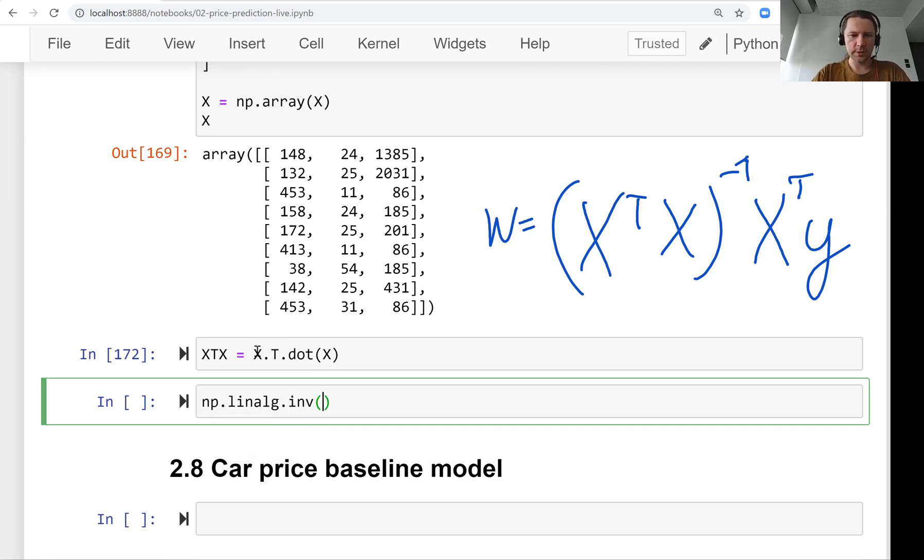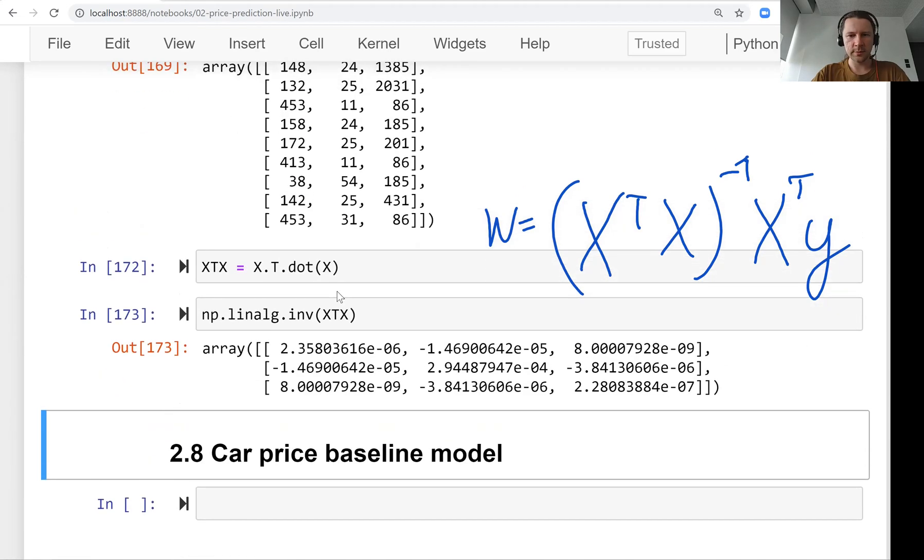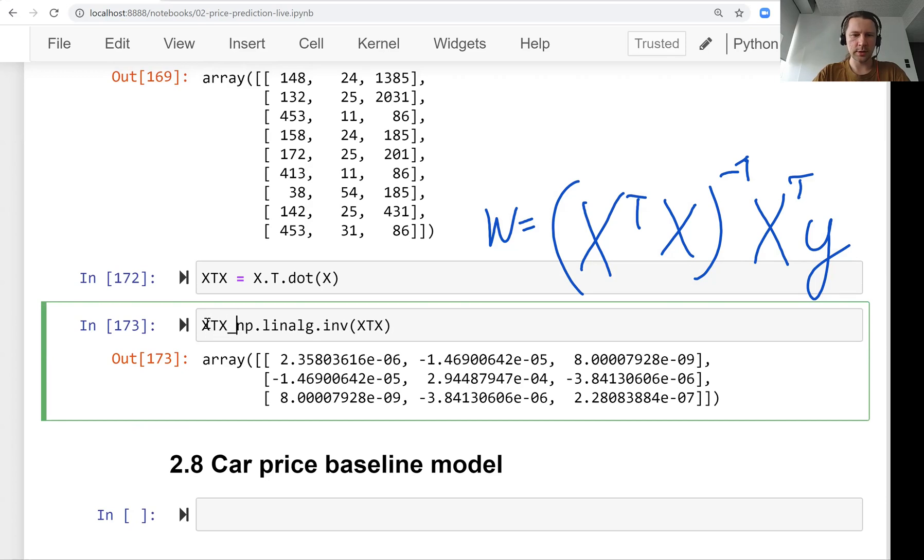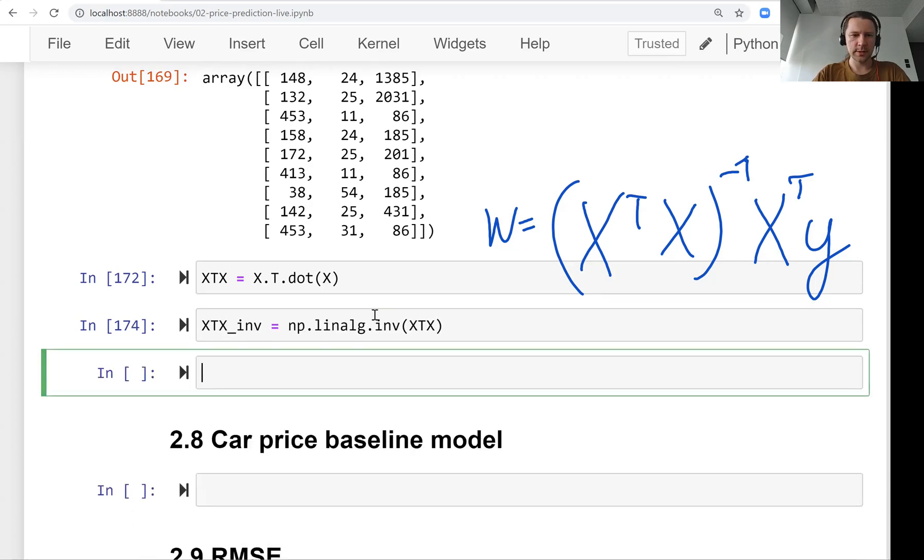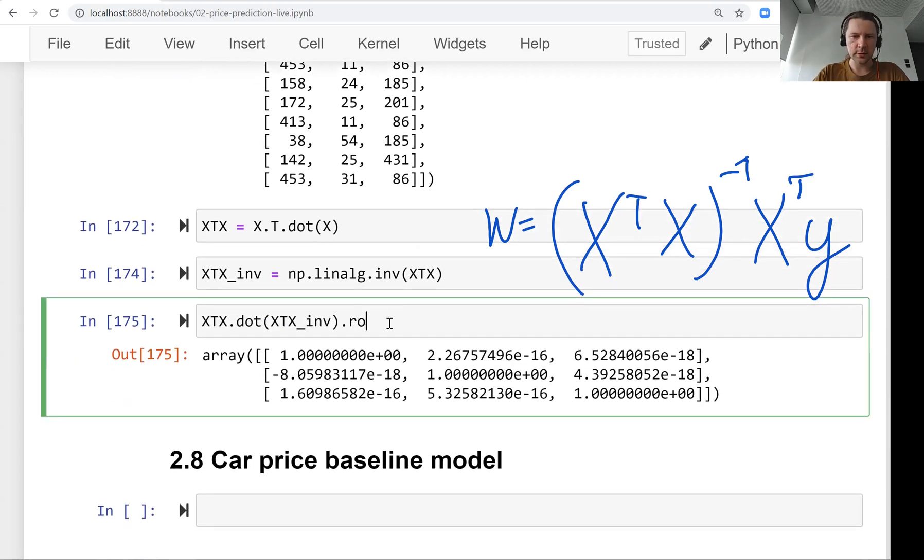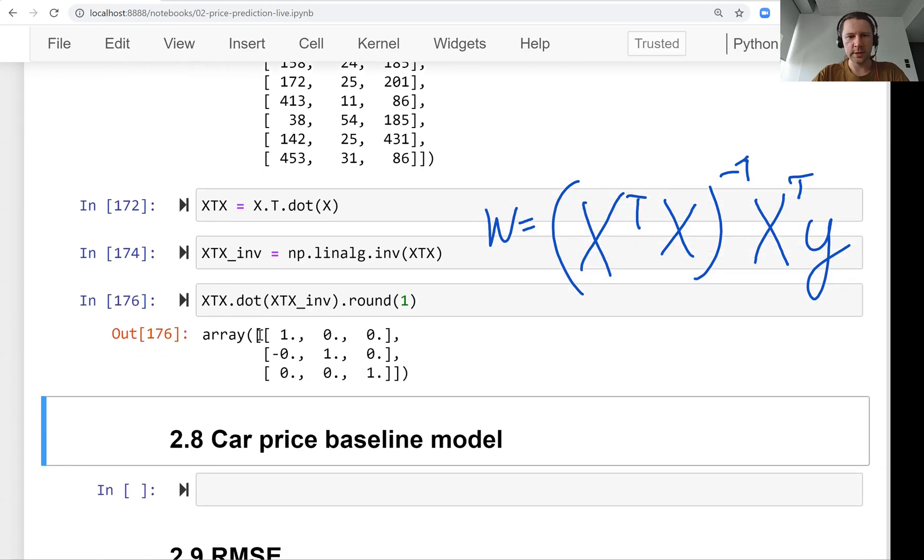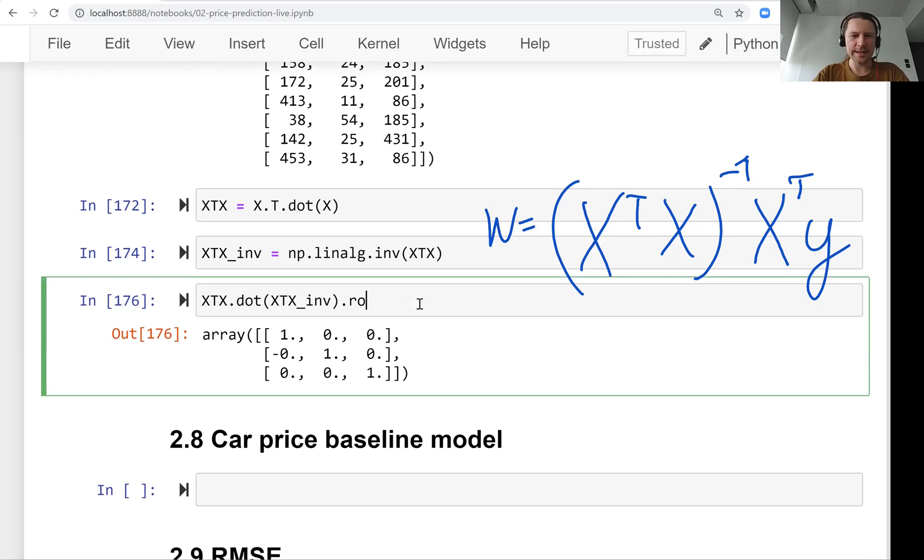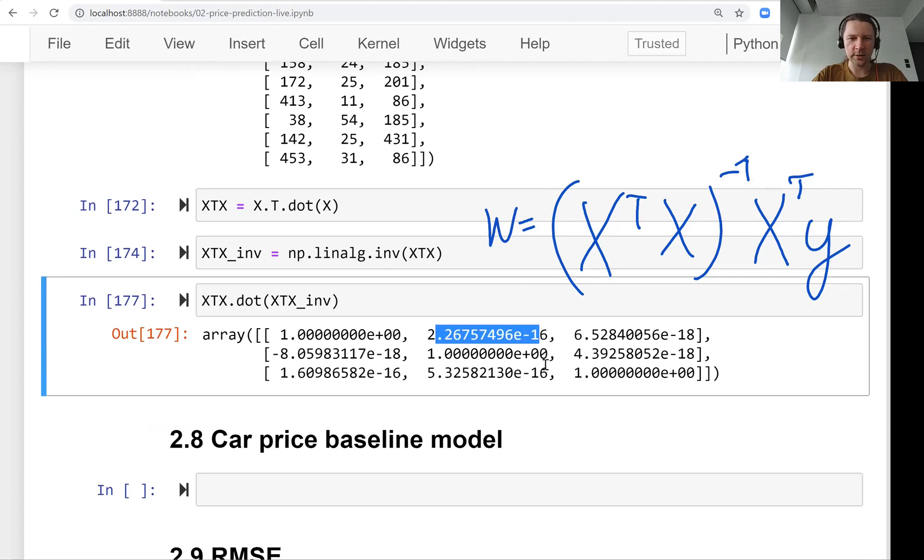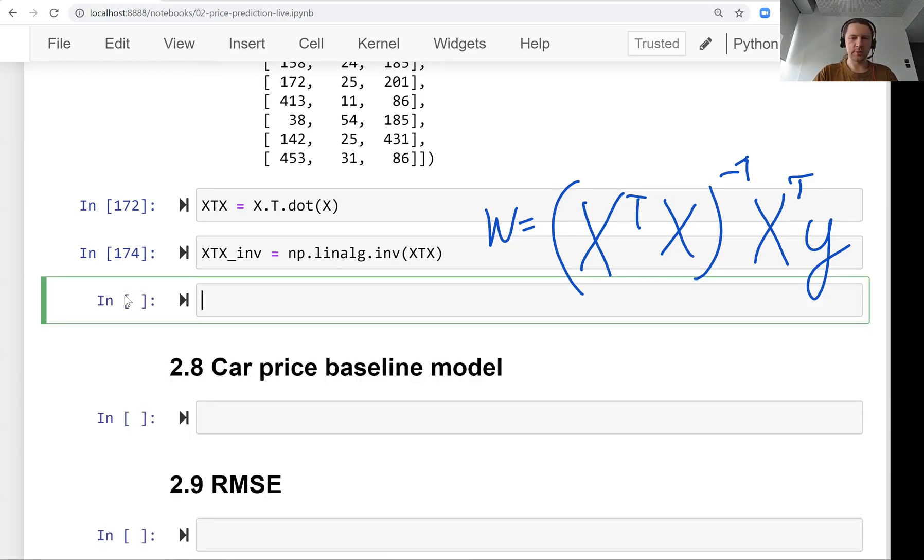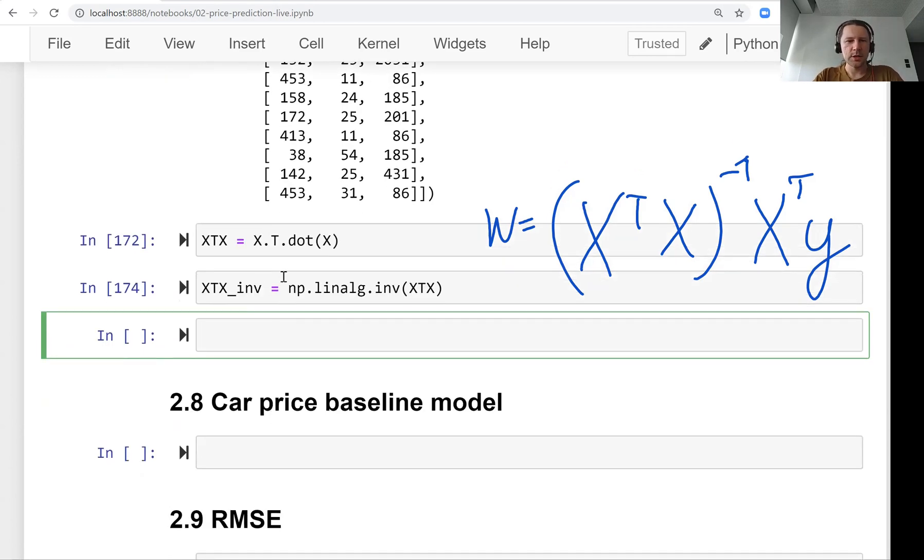And we talked about this in the previous lesson, how to find the inverse of this matrix. So we can call it XTX_inv, which is inverse. And we can quickly check that actually the dot product between them gives us an identity matrix. So we'll have ones on the diagonal. So it's not exactly identity matrix, but there are these numbers, they are super tiny. We can safely ignore them. So this is the reason for that. Machine precision is finite. So it cannot do things with infinite precision. And that's why there are some leftovers.